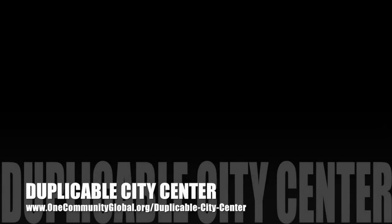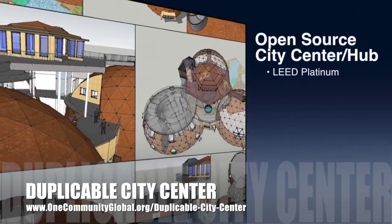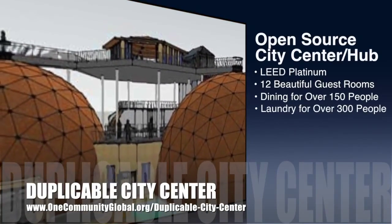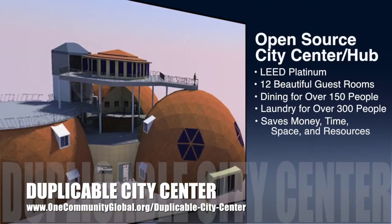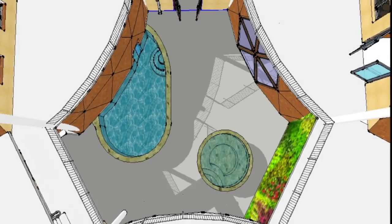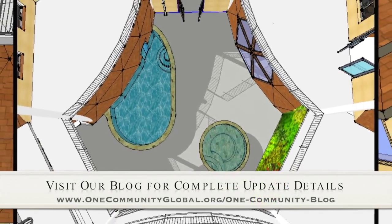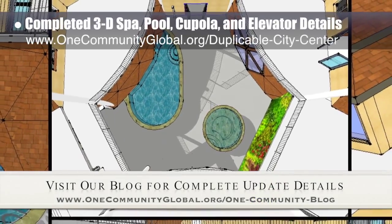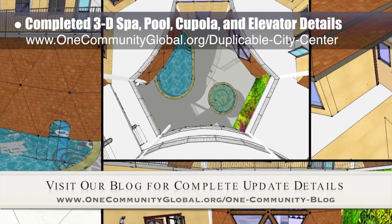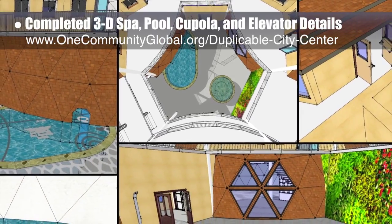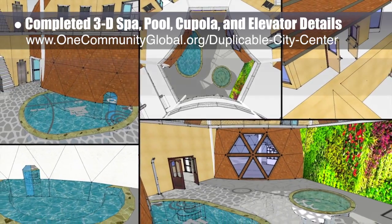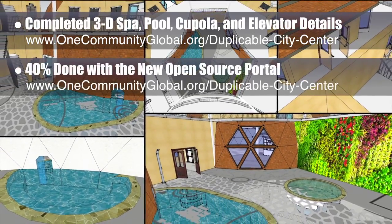OneCommunity is also creating an open source duplicable city center designed to be LEED Platinum certified, provide 12 guest rooms, dining for over 150 people, and laundry and recreation space for over 300 people — all while saving money, time, space, and resources. This last week, the core team completed 3D details for the spa, including the indoor-outdoor natural pool transition. We fixed a conflict with the rinse-off showers, removed windows and added doors to the south-facing cupola, and installed elevator doors to all four levels. We are now 40% of the way done with the duplicable city center open source portal redesign.